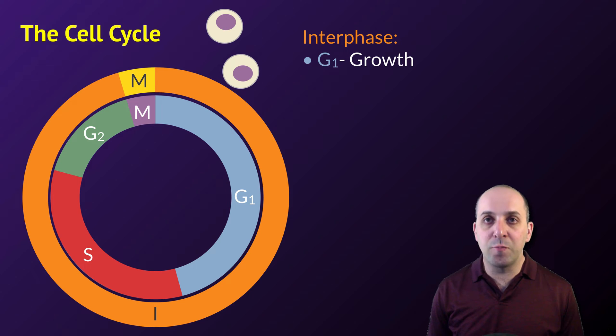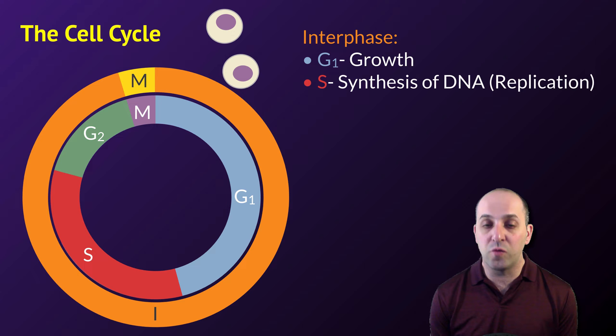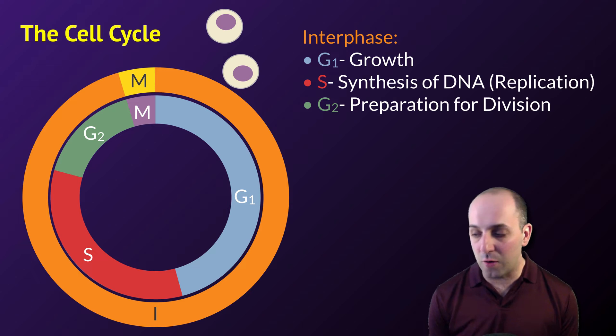In G1, the cell grows and prepares to replicate its DNA. If the cell is going to divide, it then goes through synthesis of its DNA, or the S phase, which is where replication occurs, and then the cell prepares to divide during G2.